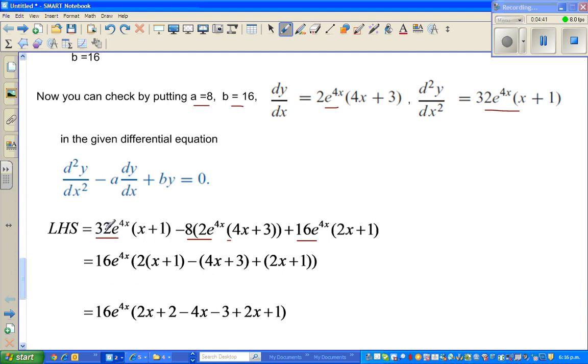If you factor out that 16e^(4x), a 2 comes here times this, so this has come here. So this whole thing has been factored out. This is minus this plus this plus this.